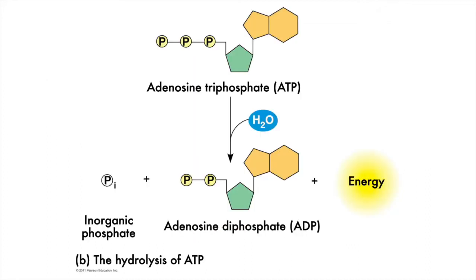ATP has adenine and ribose, like in RNA, and phosphates one, two, and three — or alpha, beta, and gamma. When we add in water and hydrolyze that gamma phosphate group off, it releases a lot of energy — delta G goes very negative. And that gamma phosphate bonded to another molecule raises the energy available for work, G, quite a bit.